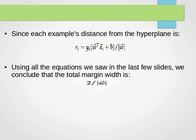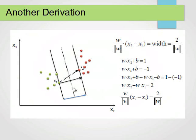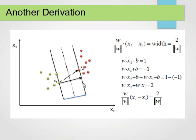Looking at Professor Sayid's website, the derivation is slightly different but reaches the same conclusion. Instead of computing the distance between the support vector and the plane, he directly computes the distance between the two support vectors: w·x2 + b = 1 and w·x1 + b = -1. Subtracting gives w·(x2 - x1) = 2, and dividing by |w| gives the margin width.